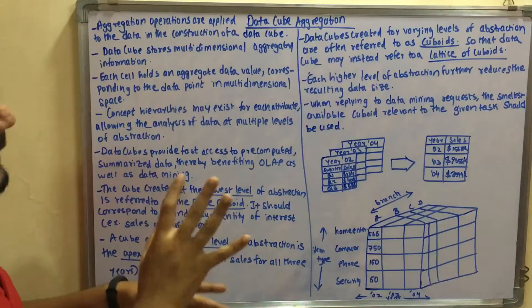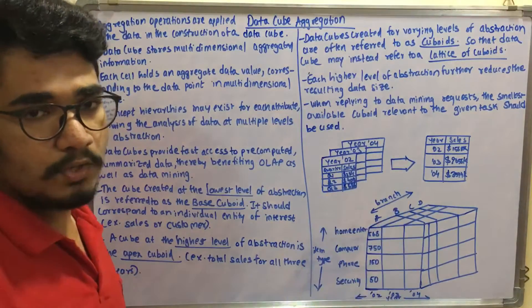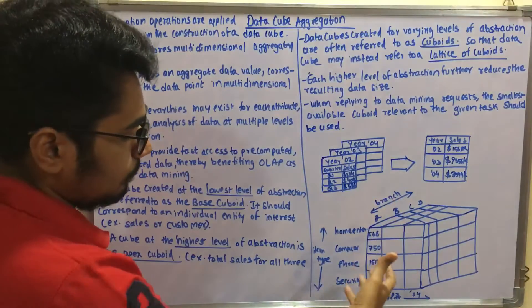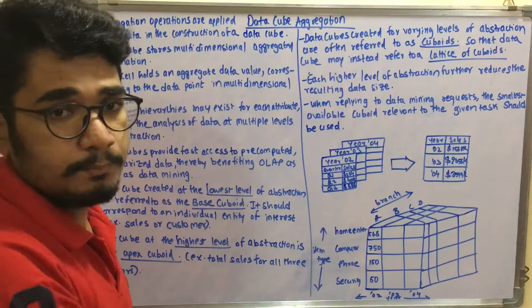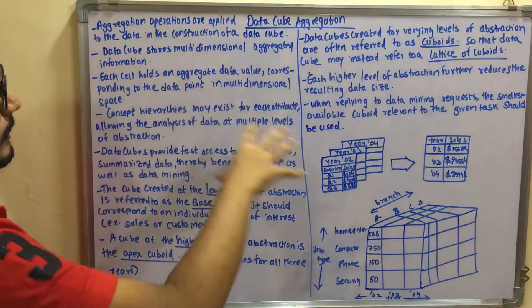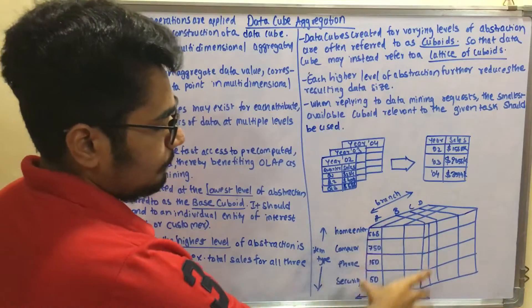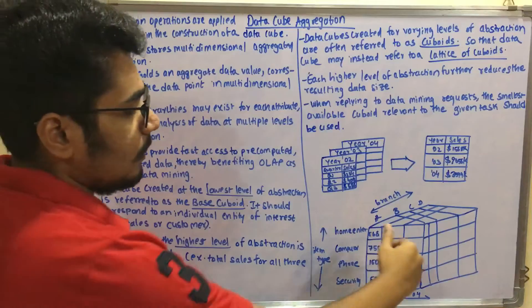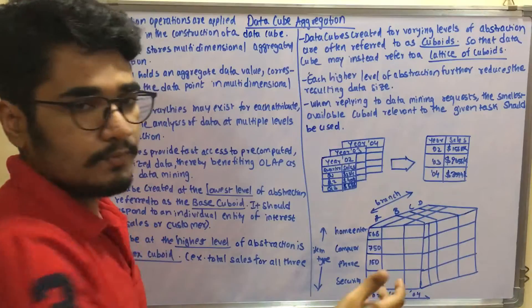Each cell holds an aggregate data value. This is a case for an all electronics data warehouse, which has categories like home entertainment, computer, phone, and security. All these individual cells contain the aggregate data for that particular abstraction level, and the values corresponding to that data point compress a multi-dimensional space. You can have one dimension (1D), or considering other sides: 2D, and at the top 3D; at the base you have 4D, 5D, 6D, and so on.